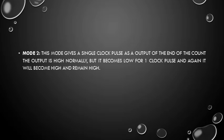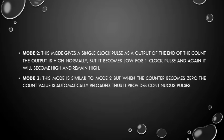Mode 2: this mode gives a single clock pulse as output at the end of the count. The output is high normally, but it becomes low for one clock pulse and then becomes high again and remains high.